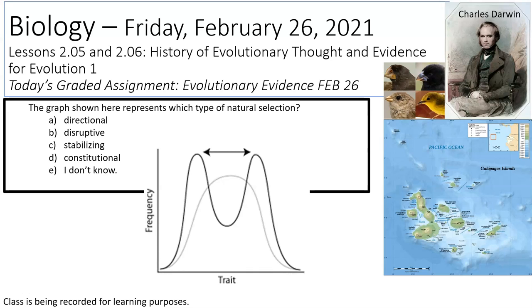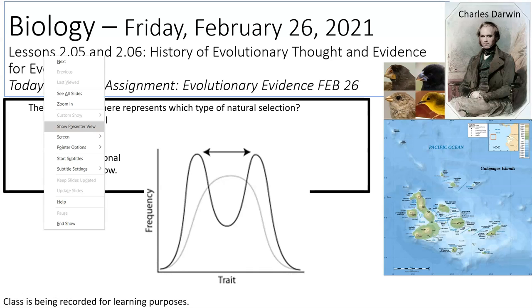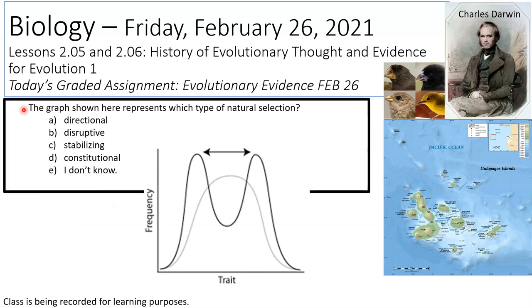If we had had a polling question at the beginning of class, we would be answering this question. It says the graph shown here represents which type of natural selection. You can see that dip in the middle means the average trait was disrupted to peaks, so we call that disruptive natural selection — letter B.